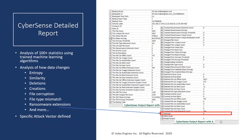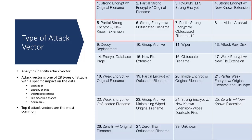What you do need to look at is the attack vector. CyberSense provides the specific attack vector — in this case, attack vector number six is being executed. You can correlate it to the full listing of attack vectors that CyberSense tracks. There are about 28 different types of attack vectors being analyzed.